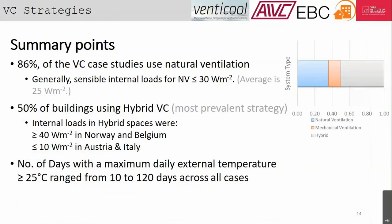50% of buildings use hybrid ventilative cooling — a combination of natural cooling with some mechanical strategy — and this was the most prevalent approach. In hybrid systems, internal loads in Norway and Belgium were greater than 40 watts per square meter, but less than 10 watts in Austria and Italy. The number of days with a maximum daily external temperature greater than 25°C ranged from 10 days up to 120 days in Japan, showing the large range of climates where these solutions were applied.